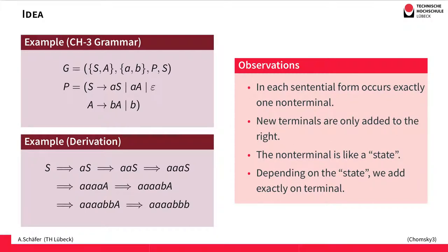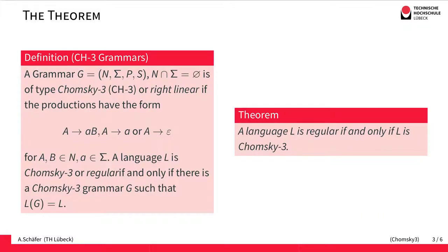So we might guess that the Chomsky 3 languages are the same languages that could be accepted by a finite automaton. And this is actually the case. We have a theorem: language L is regular if and only if L is Chomsky 3. So the Chomsky 3 languages are exactly the regular languages.